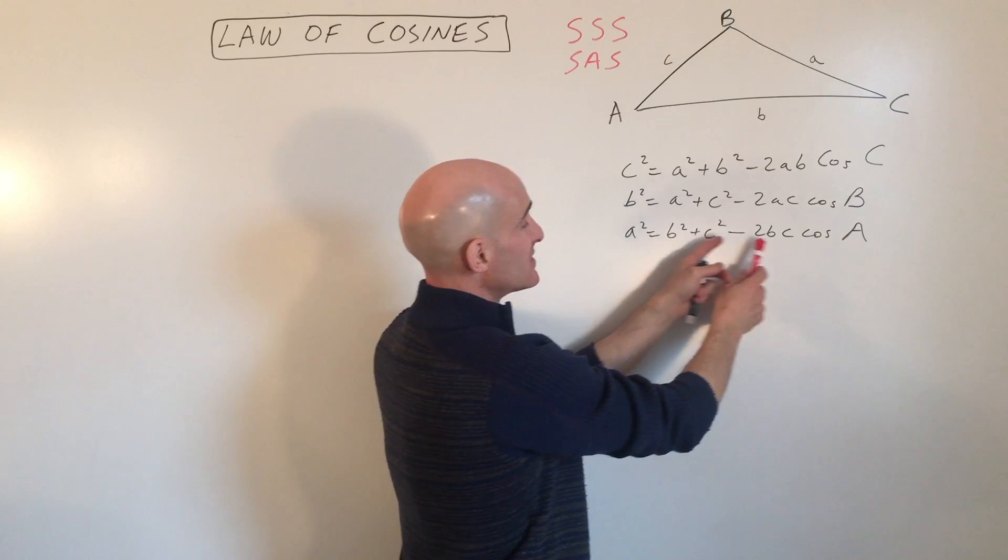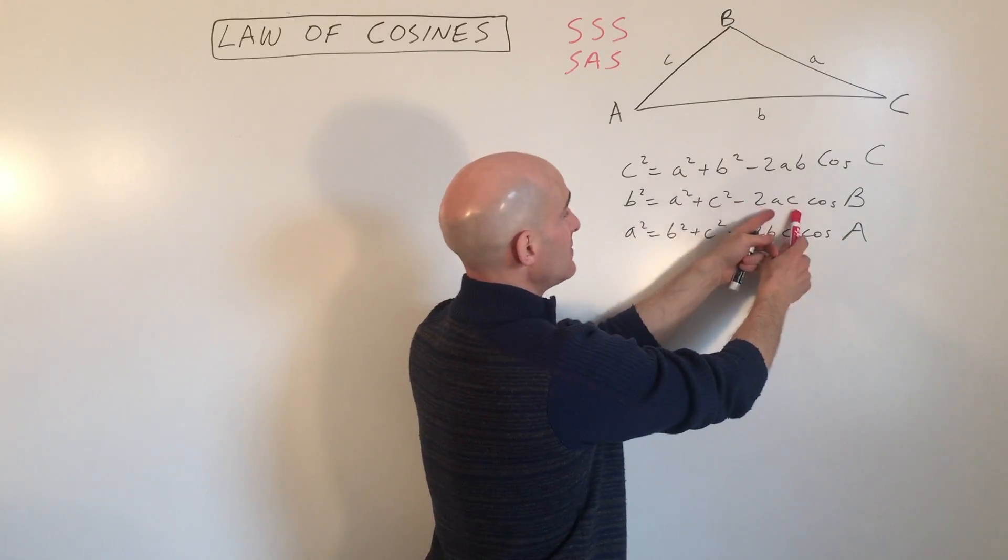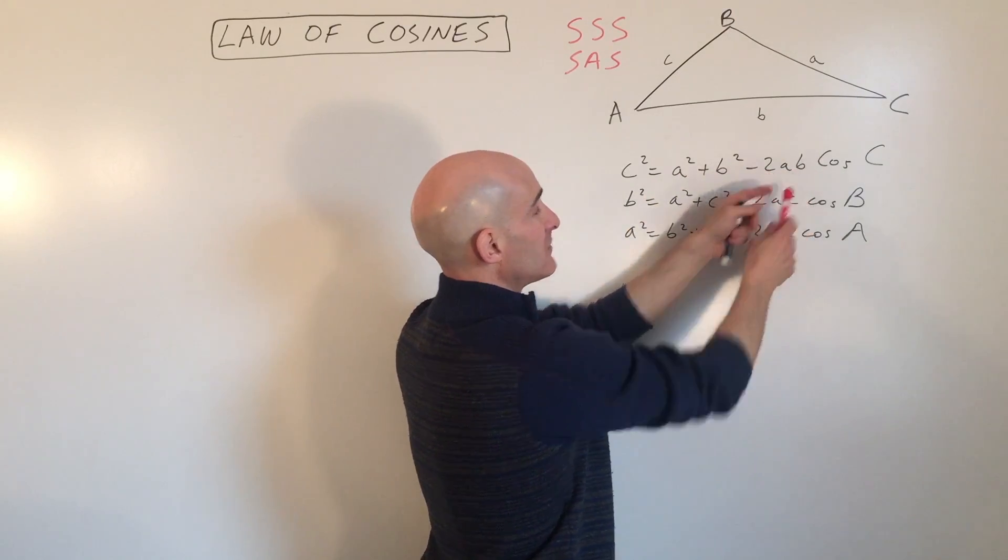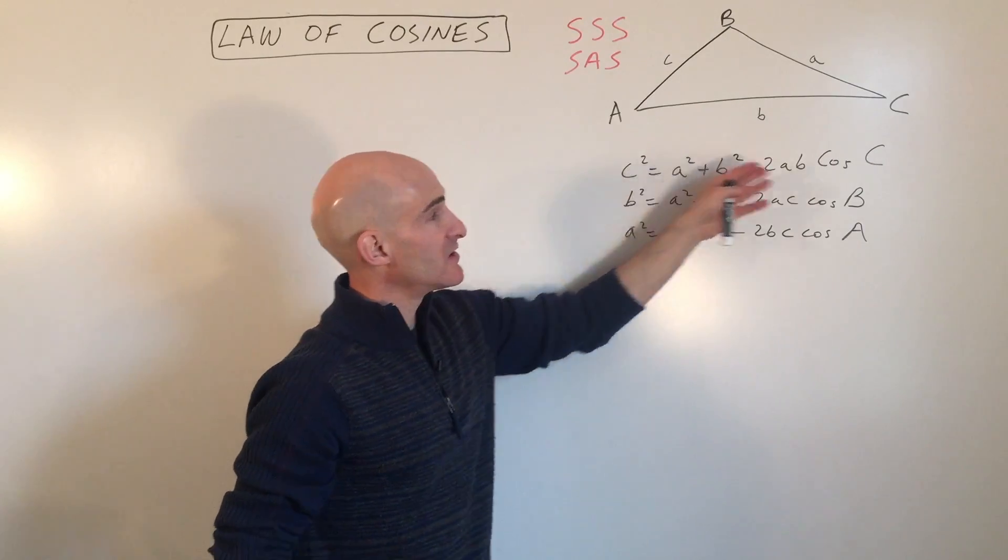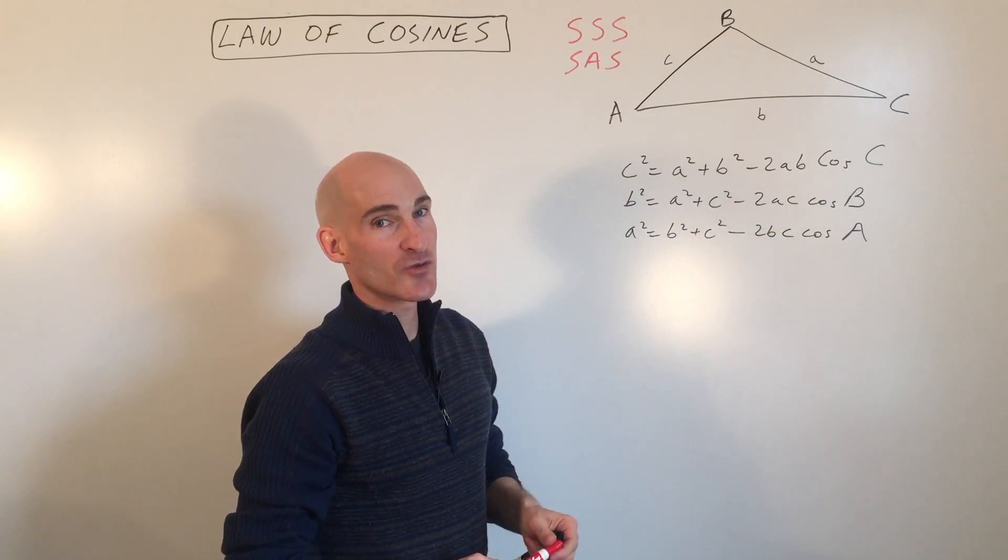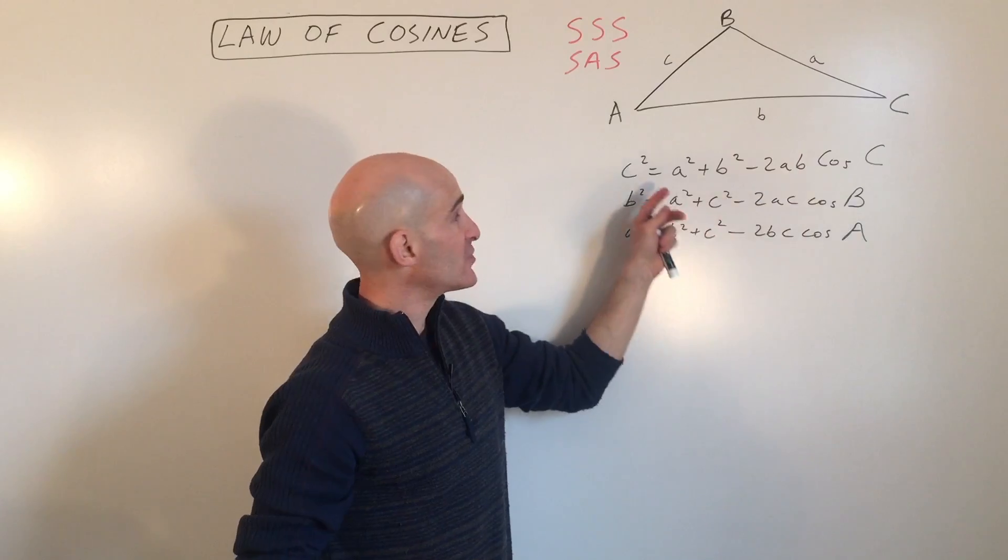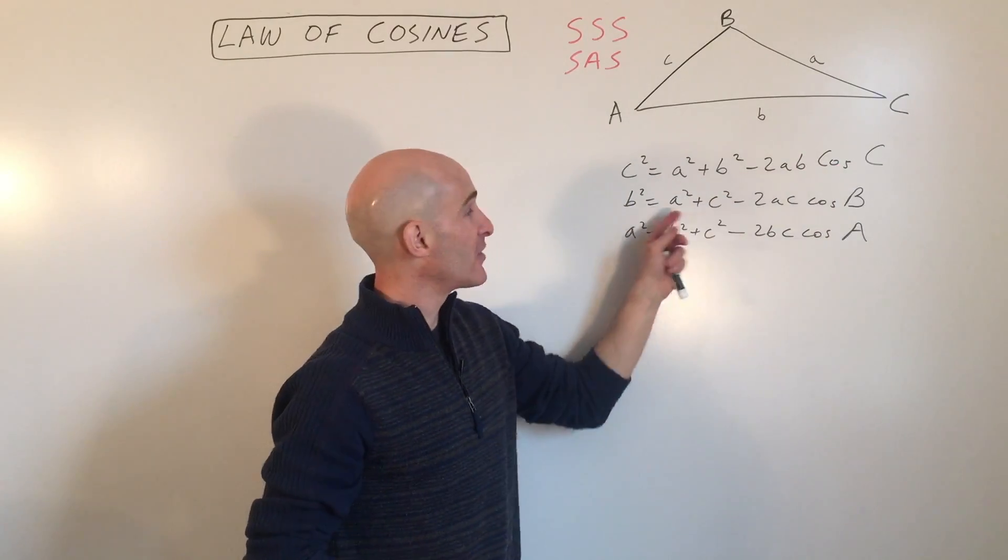The other two letters, B and C, A and C, A and B, A and B. So you can see there's definitely a pattern here that helps you to remember these formulas. If you just remember one of them, you'll be able to figure out the other two.